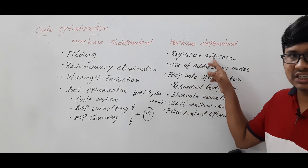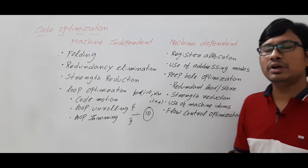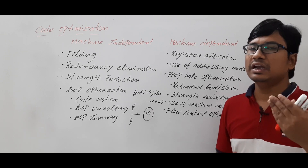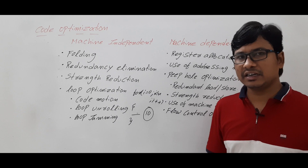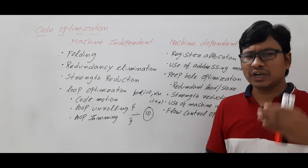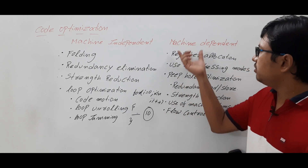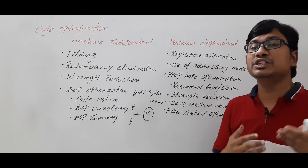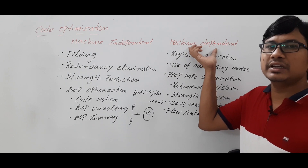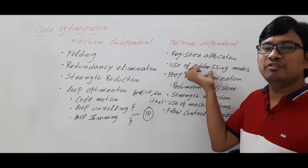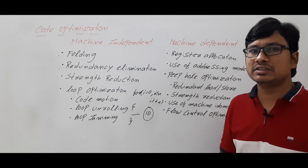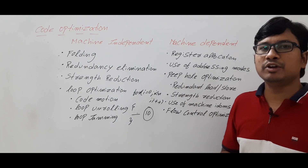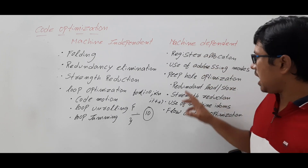Now let me discuss machine-dependent code optimization. We have register allocation and use of addressing modes. When I discussed computer organization I covered about 10 types of addressing modes — direct addressing mode, indirect addressing mode, register direct addressing mode, register indirect addressing mode, and others. This code optimization varies from machine to machine.